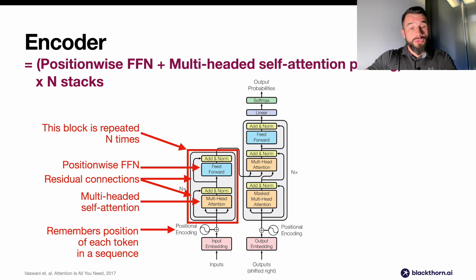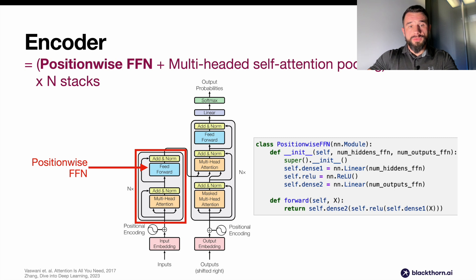The position-wise feed-forward network transforms the representation at all the sequence positions using the same multi-layer perceptron. This is why we call it position-wise. Here you can see its source code: two layers with a non-linear activation between them, and that's it. The secret is that it performs many predictions for every vocabulary token at each step of a sequence. Since the same MLP transforms at all the positions the inputs, and the positions are the same, their outputs are also identical.